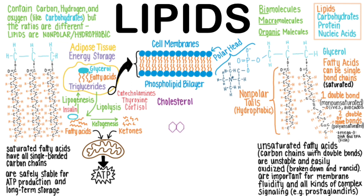Cholesterol is a ring-based lipid and an important component in the cell membrane. As much as 25% of the cell membrane may be cholesterol. Its cell membrane roles include decreasing membrane permeability and stabilizing the membrane even when there are minor temperature fluctuations. It's also important in determining where membrane proteins and channels will be located.